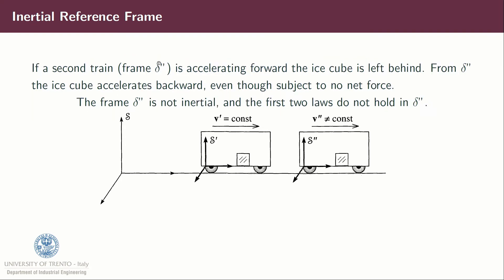But now, if we consider a second train, frame delta second, accelerating forward, then the ice cube will be left behind. And from delta second, the ice cube accelerates backward, even if there is no net force on the cube. The frame delta second is not an inertial frame and the first two laws do not hold in this frame.